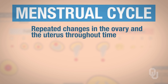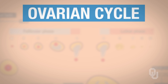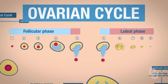We have two different cycles that we'll be discussing. We'll be talking about the ovarian cycle, and the ovarian cycle includes two different phases — the follicular phase and the luteal phase. The follicular phase occurs first.